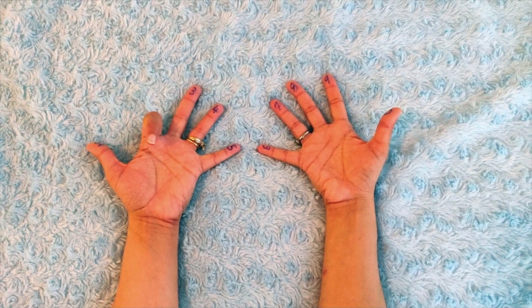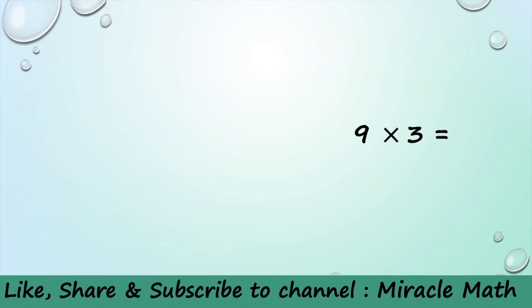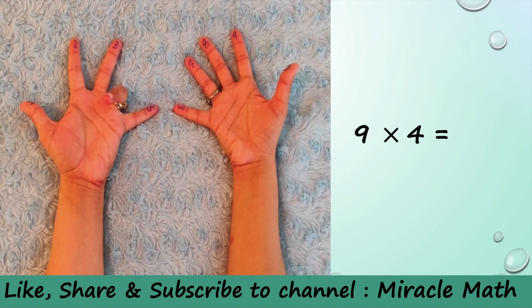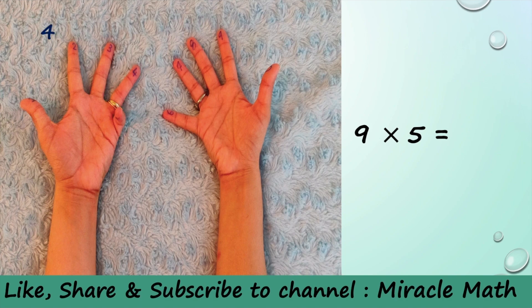Similarly, 9 times 3 is 27, 9 times 4 is 36, 9 times 5 is 45.